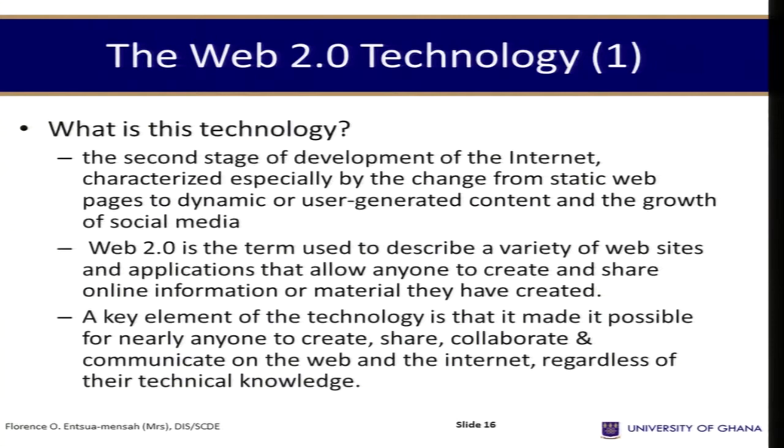The previous topic identified, in general, some of the ways in which digital technology affects library information services. This topic follows up with a specific digital technology that has spearheaded the digital transformation process in libraries, and that is Web 2.0 and social media. What is Web 2.0? It is a second stage of development of the Internet, characterized especially by the change from static web pages to dynamic or user-generated content and the growth of social media.